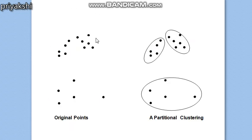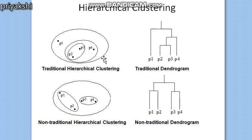As you can see, this is the original data. A partitional clustering will divide them into non-overlapping clusters, meaning a particular object can belong to only one cluster. But with hierarchical clustering, the same data can have nested clusters — this is a sub-cluster — and these are generally represented in the form of a tree, which is popularly known as a dendrogram in data mining. This is your hierarchical clustering versus partitional clustering.